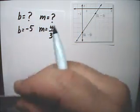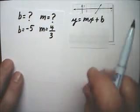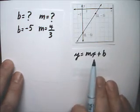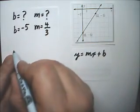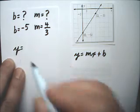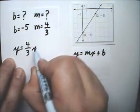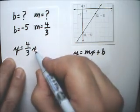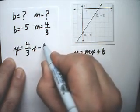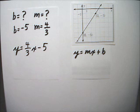And using y equals mx plus b, we'll have y is equal to 4 thirds x plus b. And plus a minus 5 is just minus 5. So, the answer is y equals 4 thirds x minus 5.